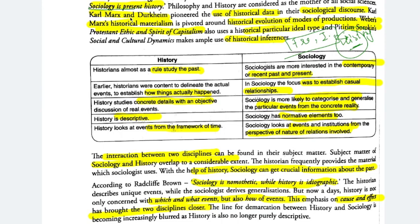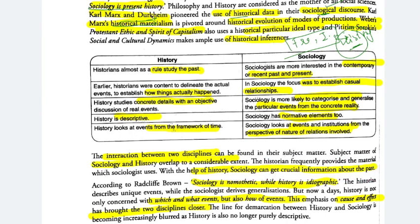Karl Marx and Durkheim used historical data in their sociological discourse. If you need any relation about society, you need to know about the past, so you get historical data. Karl Marx's historical materialism — if you go to my channel in random sociology videos, historical materialism and dialectical materialism have also been explained. We will learn further in this chapter about the historical evolution of modes of production.